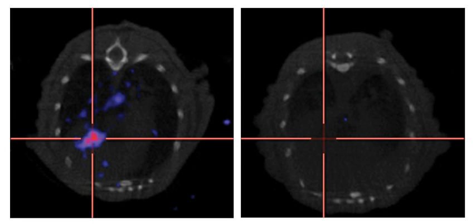Oncolytic viruses are thought not only to cause direct destruction of the tumor cells, but also to stimulate host anti-tumor immune system responses. The potential of viruses as anti-cancer agents was first realized in the early 20th century, although coordinated research efforts did not begin until the 1960s.